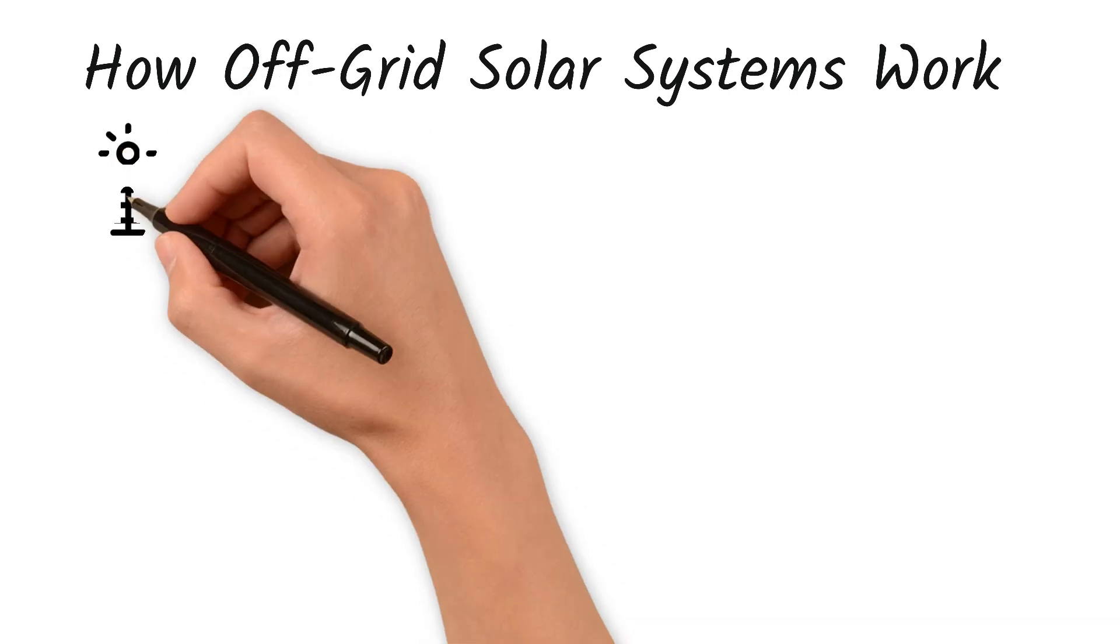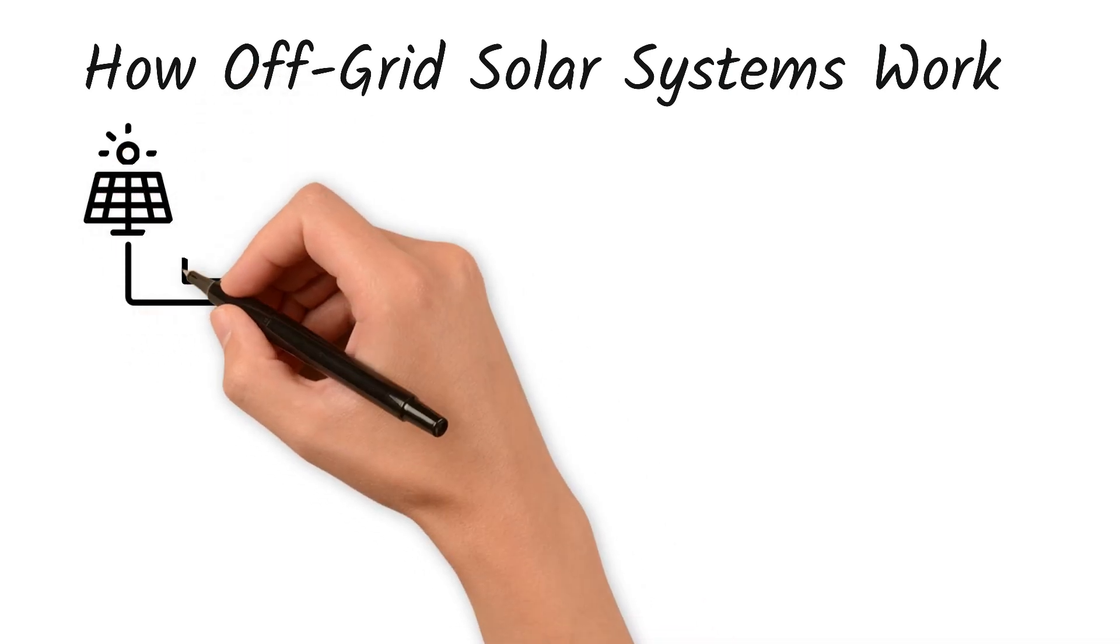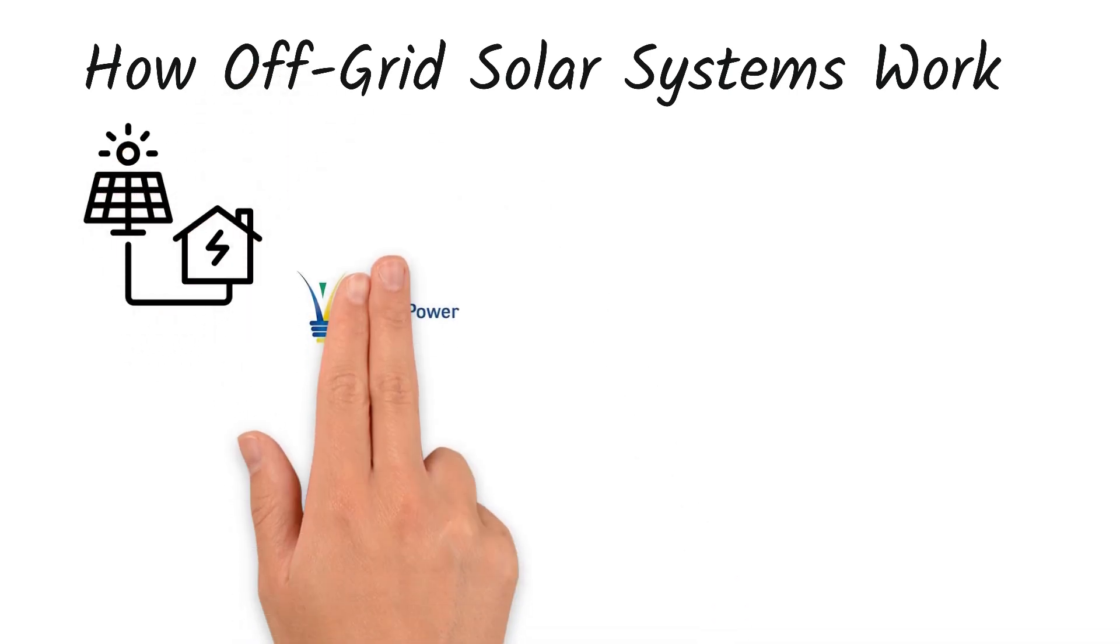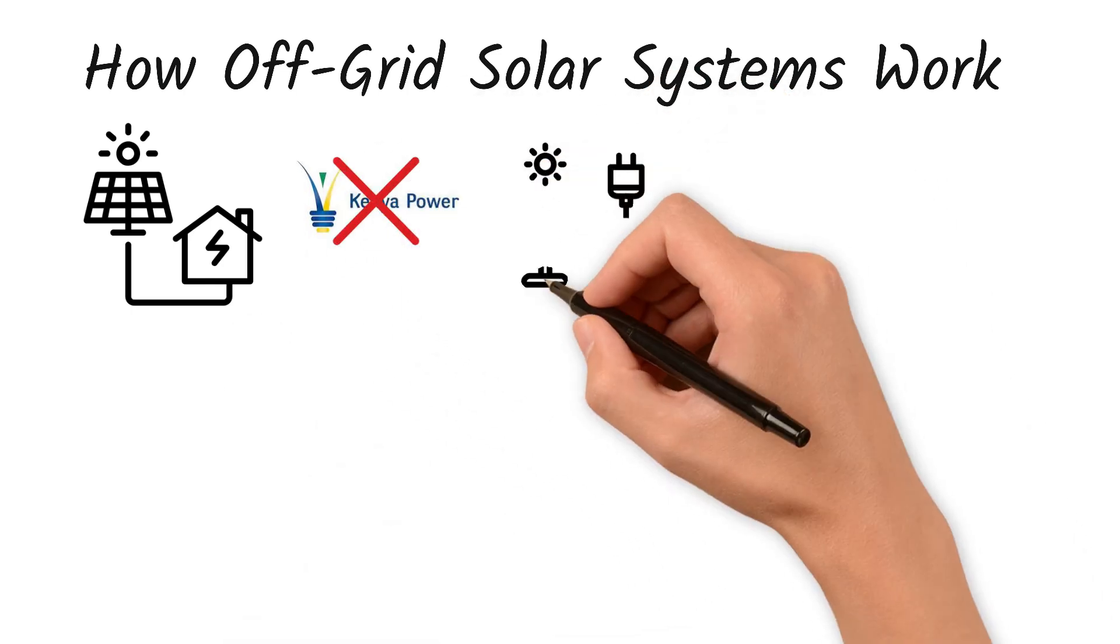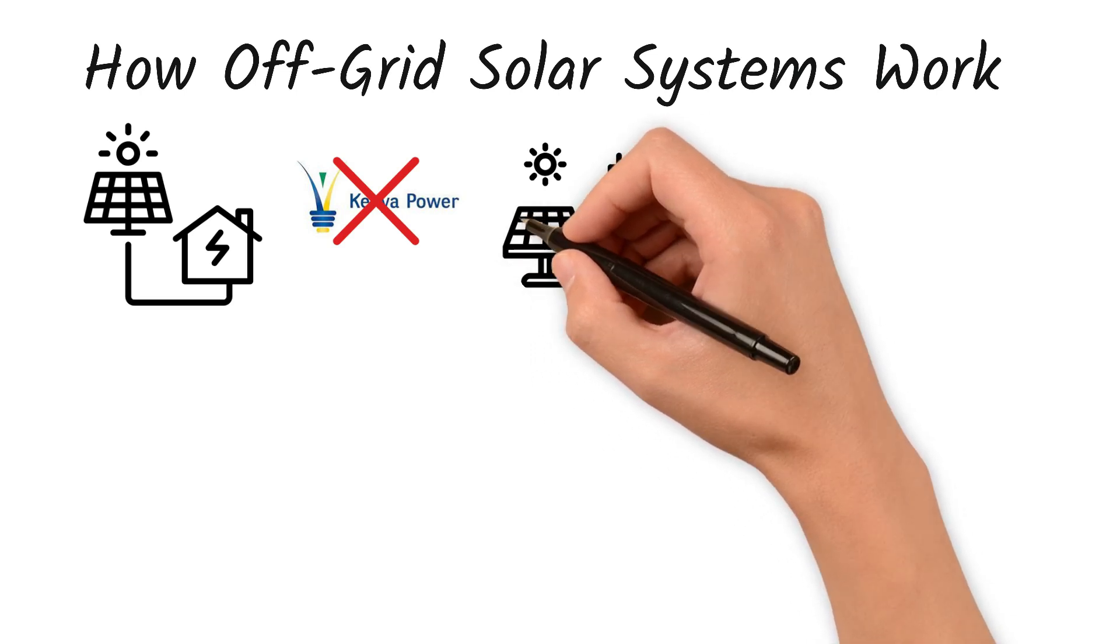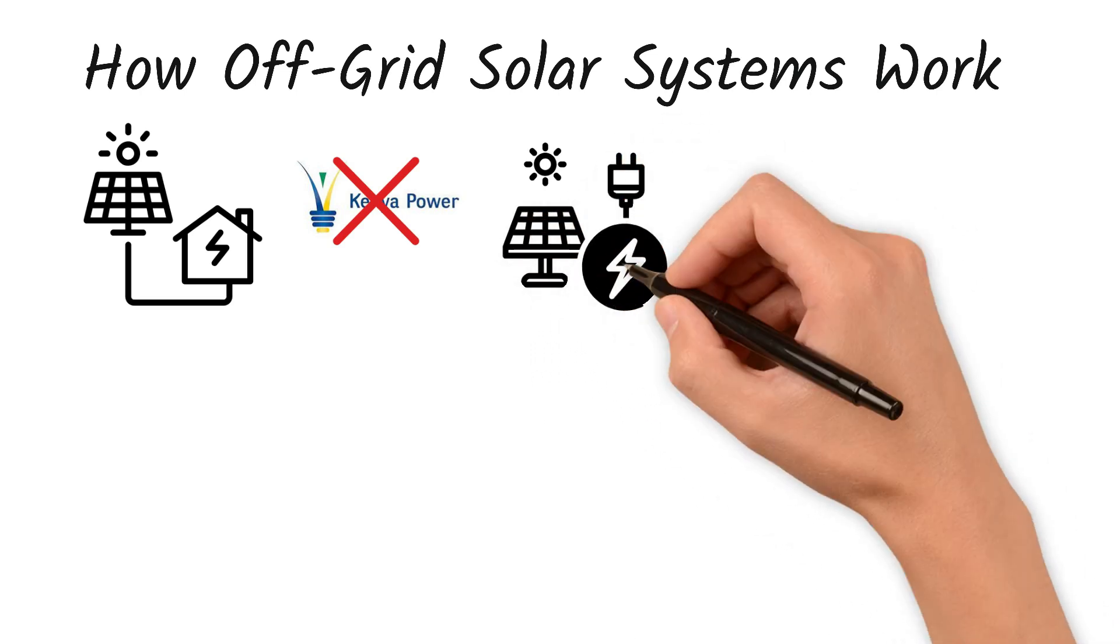How off-grid solar systems work? Off-grid systems are independent solar power setups that do not rely on the national grid. Think of it as having your own mini power company right in your compound. Here's how it works.